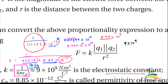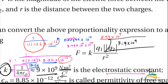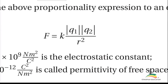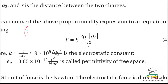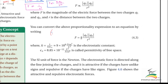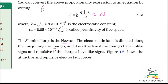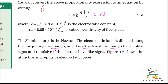K equals 9 times 10 to the power of 9 newton meter squared per coulomb squared. The electrostatic force is directed along the line joining the charges and it is attractive if the charges have unlike signs, and repulsive if the charges have like signs.